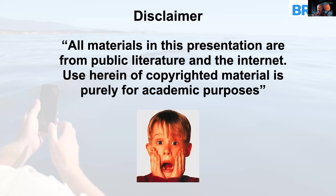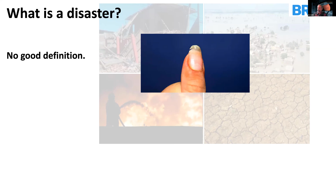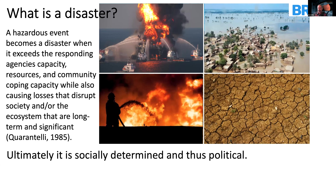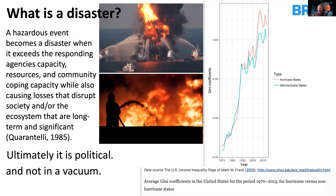Here's the disclaimer: I took this from all over the place, so don't sue me for it. Let's start off with a disaster. This brings to mind the statement by Justice Potter Stewart — you know it when you see it — but it's not so easy to define. Technically, a hazardous event becomes a disaster when it exceeds the responding agency's capacity and resources to respond to it. A magnitude 6 earthquake in Japan is not a disaster; a magnitude 6 earthquake in Haiti is.